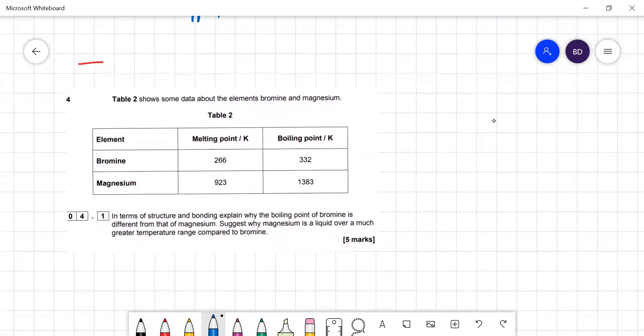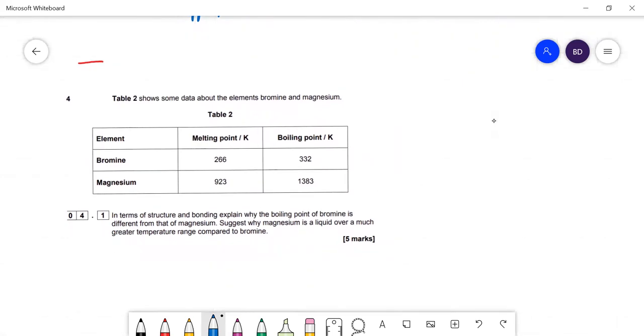Structure and bonding question: explain why the boiling point of bromine is different from magnesium. Bromine is Br2 covalent molecules. It's got a low boiling point because the only interactions between those molecules are van der Waals forces, and they're small molecules.